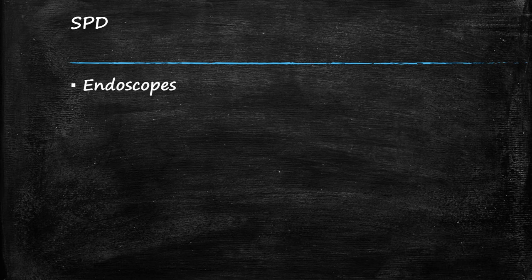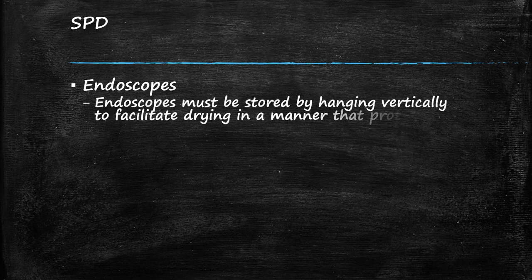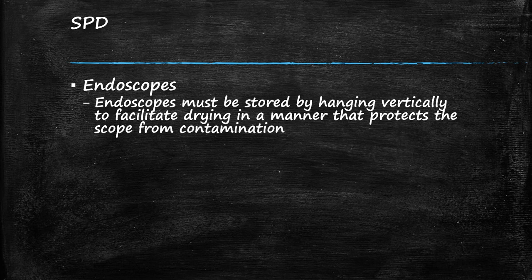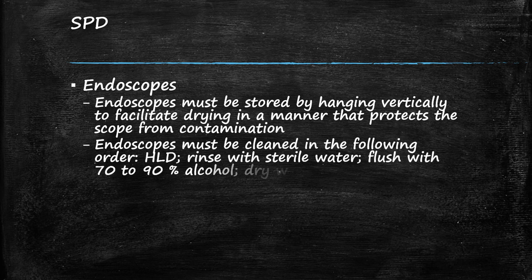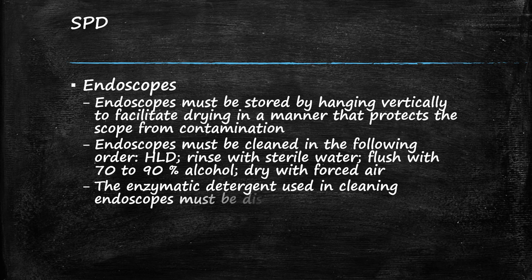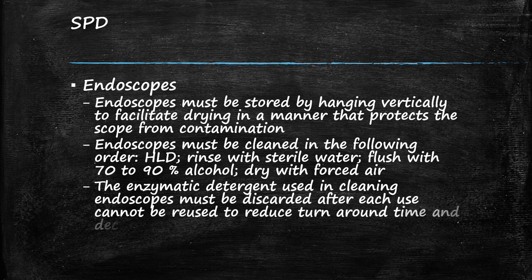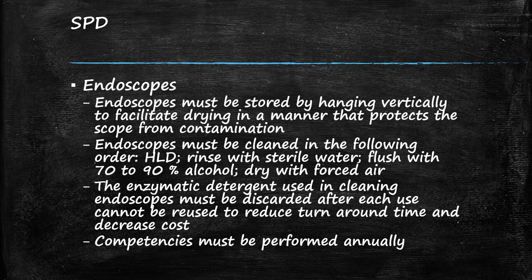Endoscopes must be stored by hanging vertically to facilitate drying in a manner that protects the scope from contamination. Endoscopes must be cleaned in the following order: high-level disinfection, then rinse with sterile water, flush with 70 to 90 percent alcohol, and dried with forced air. The enzymatic detergent used in cleaning endoscopes must be discarded after each use and cannot be reused to reduce turnaround time and decrease costs. Competencies must be performed annually.